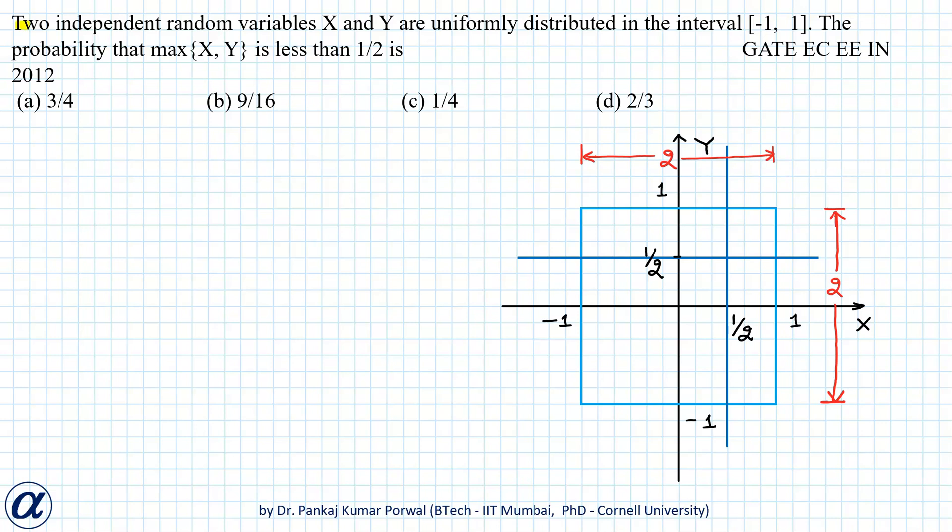In this question, we are given that two independent random variables X and Y are uniformly distributed in the interval [-1, 1], where X varies from -1 to 1 and Y also varies from -1 to 1.